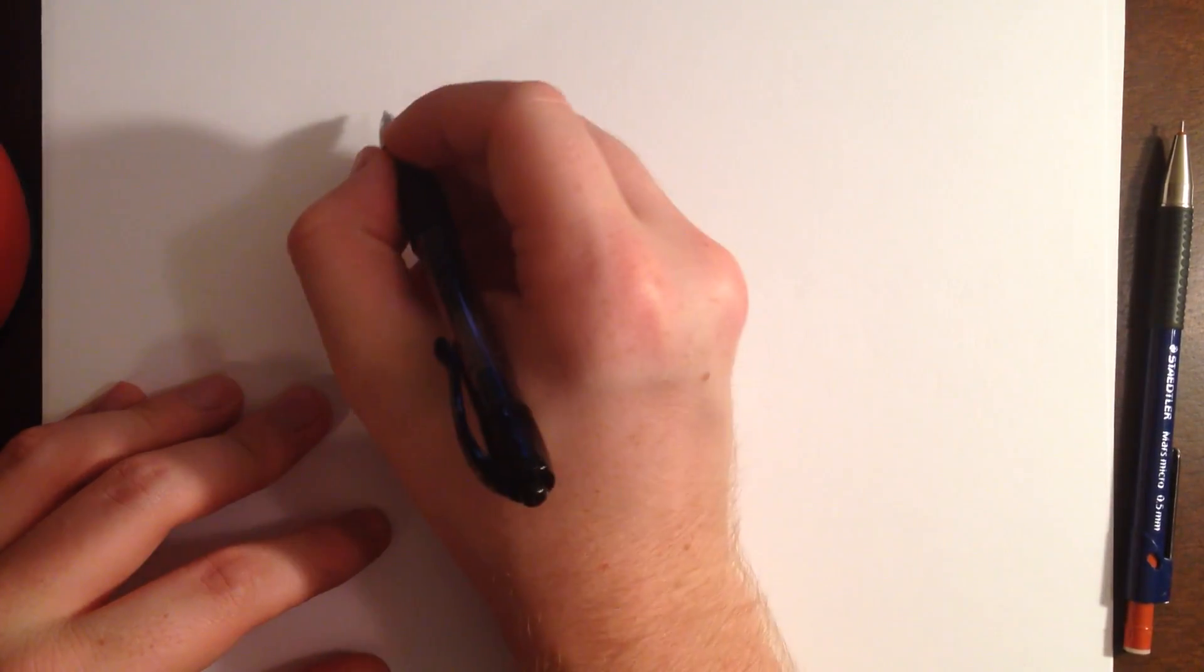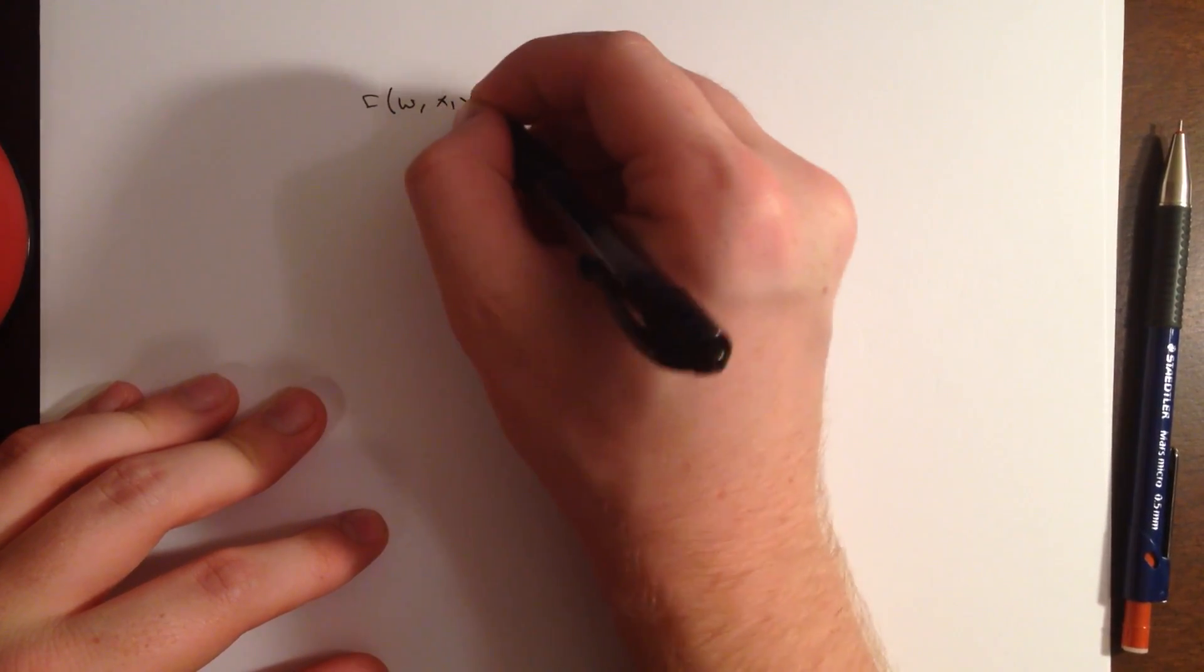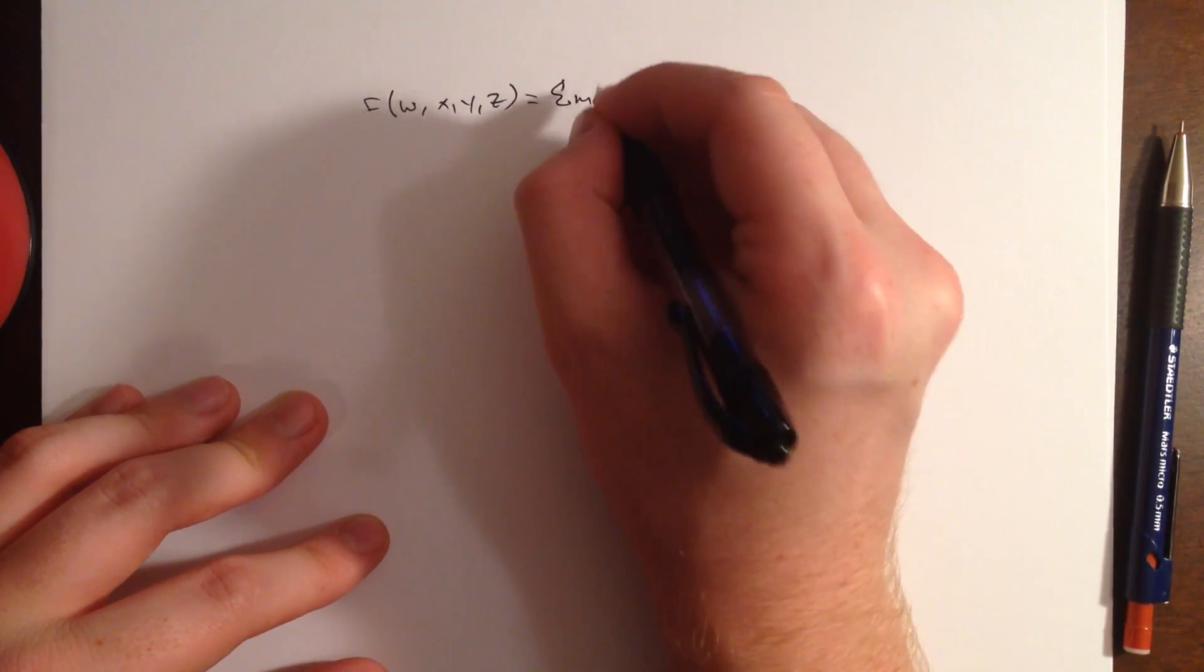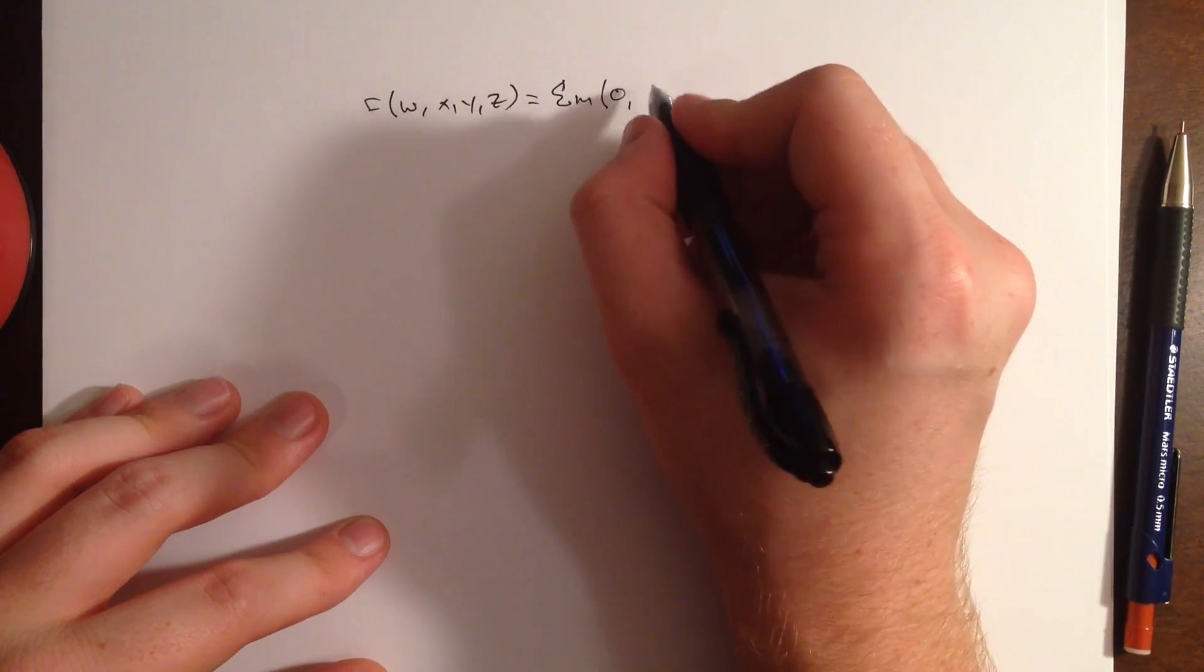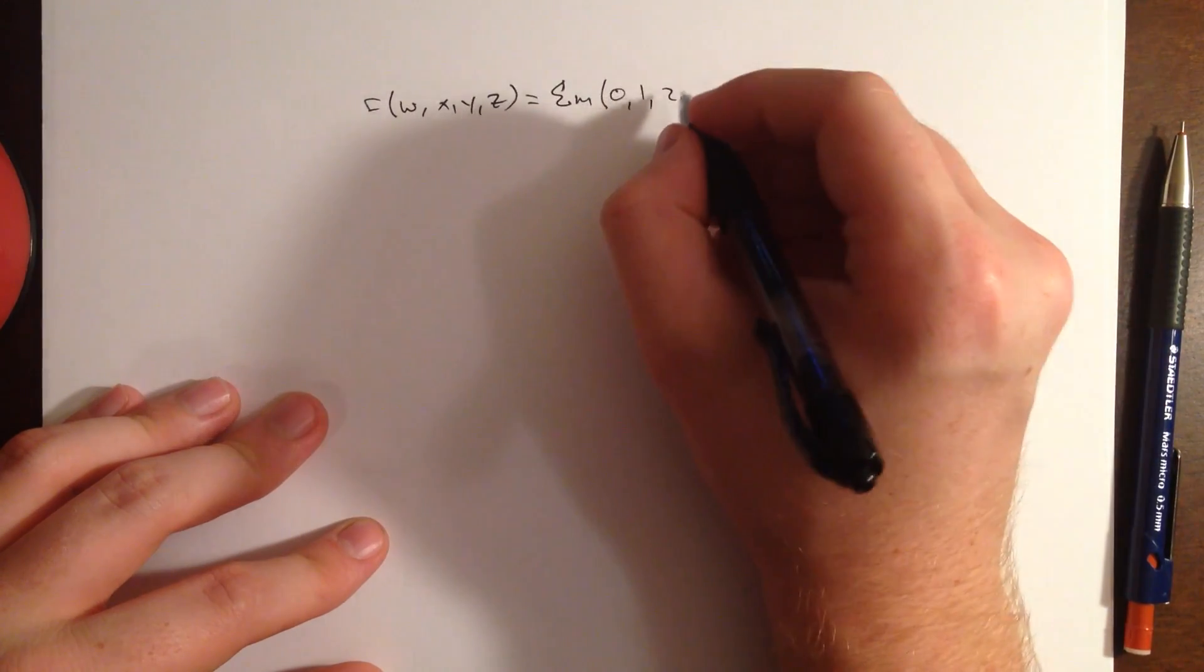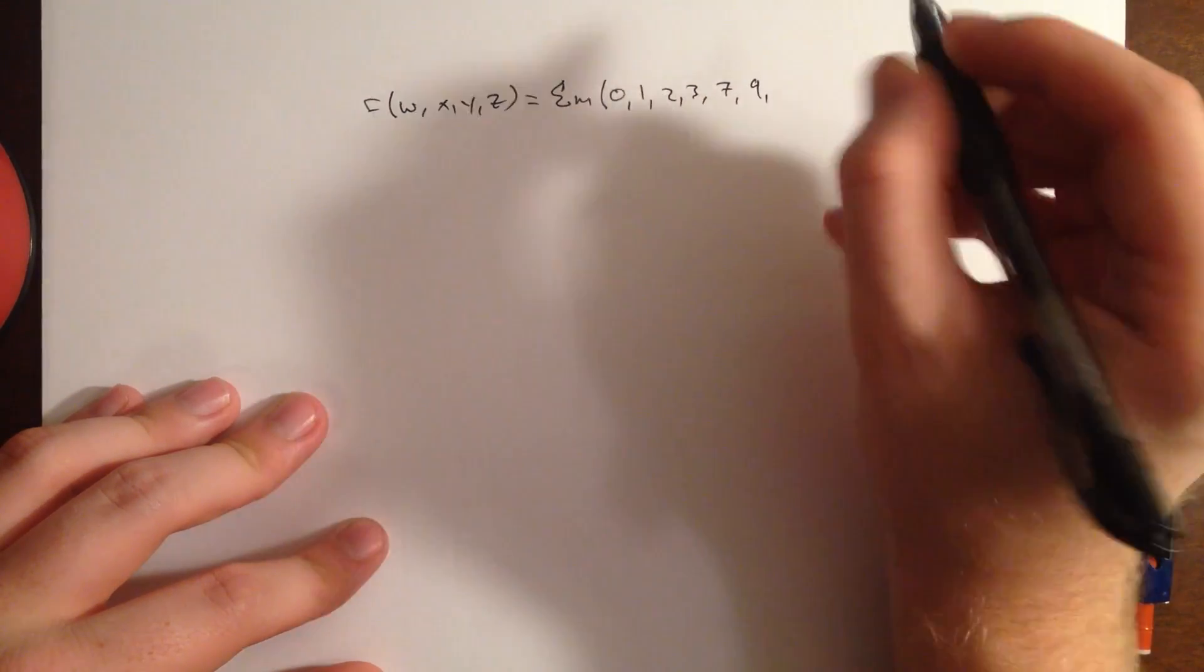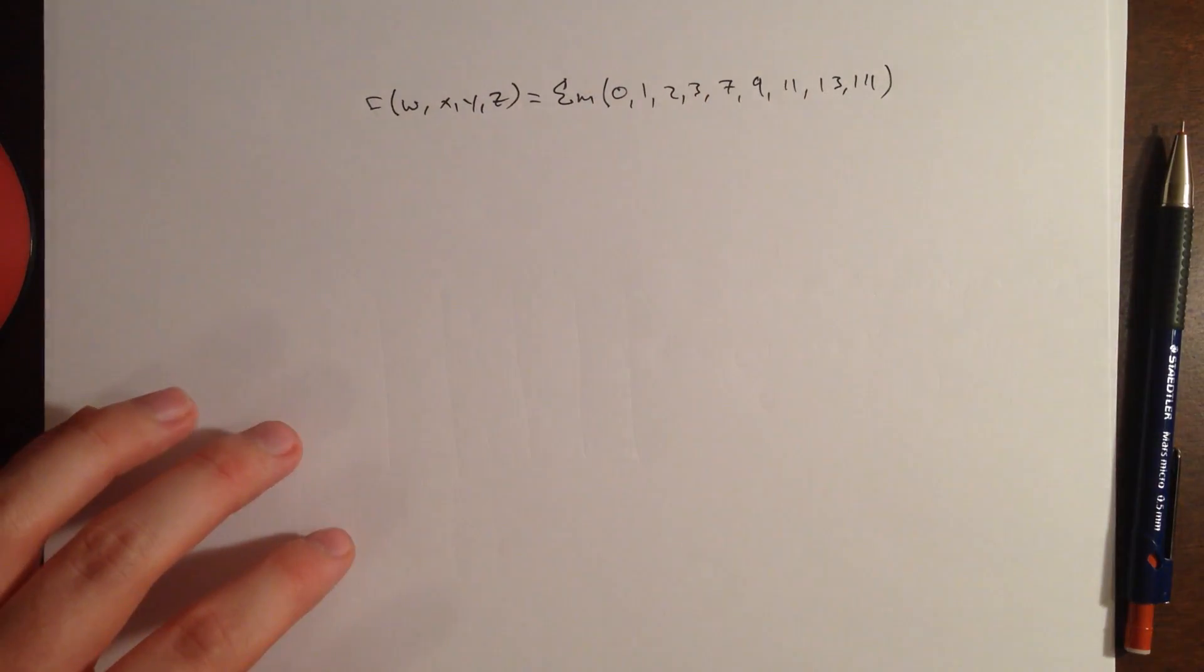Okay, let's go ahead and say that f of wxyz is equal to the sum of the minterms, terms 0, 1, 2, 3, 7, 9, 11, 13, 14.